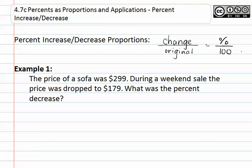Looking back at the formula, we know that we need to have the change, so this would be 299 minus 179 for the original price minus the new price, and then we place this over the original price. Remember, the 299 was the original price, and this will equal some percent or x over 100.